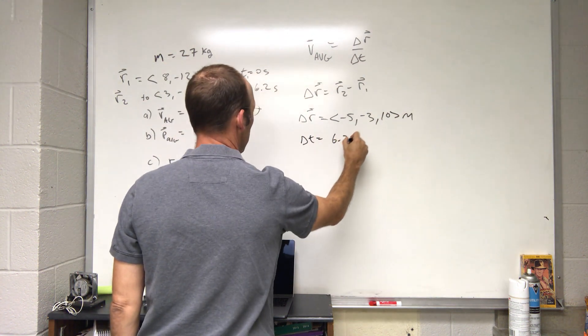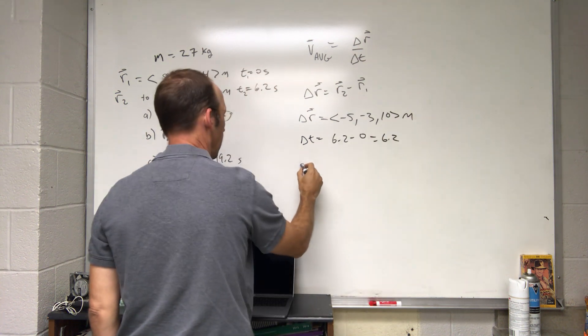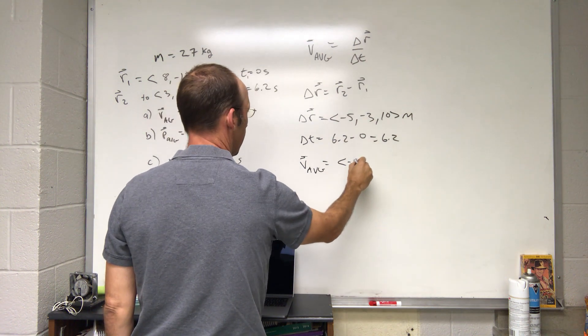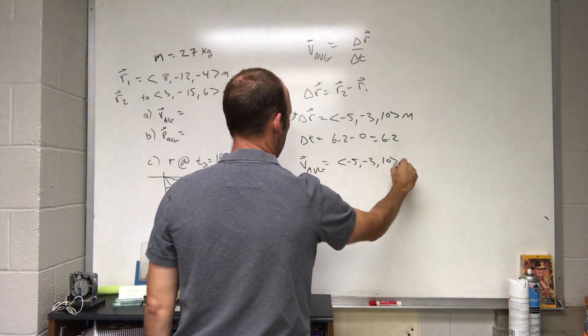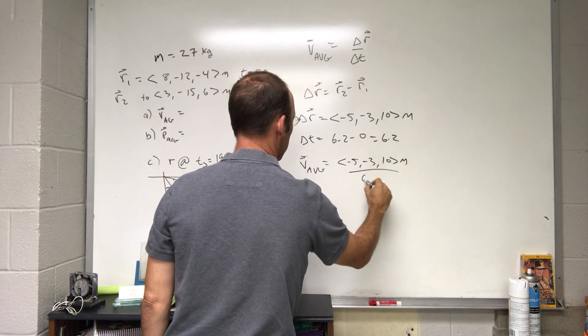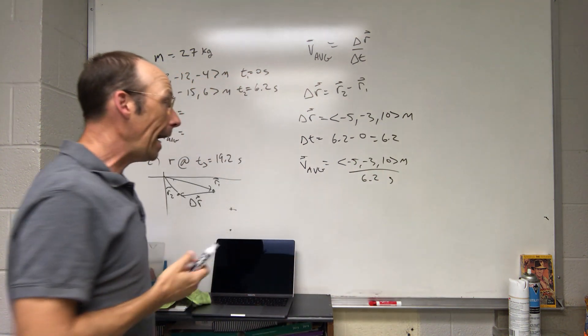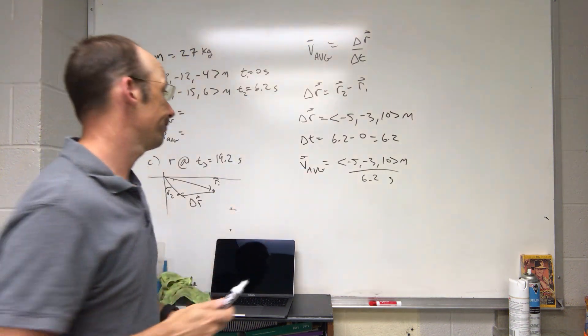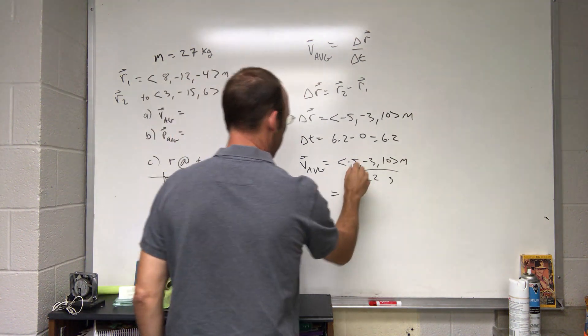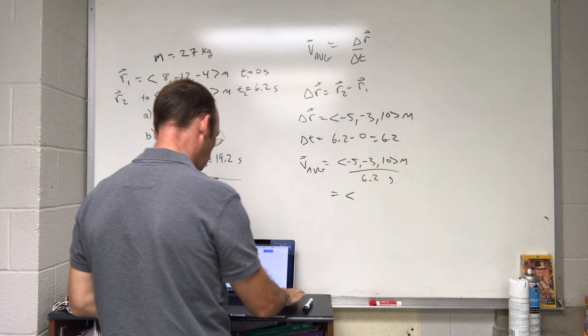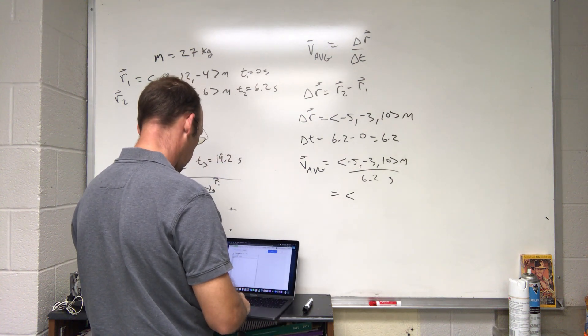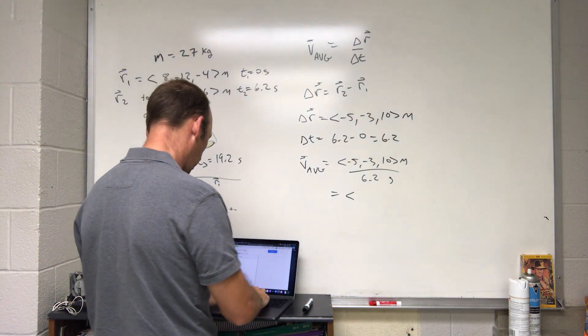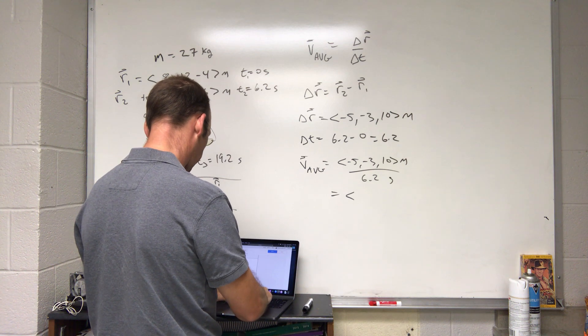That is my displacement. Now for my delta t, I get the final time of 6.2 minus 0, which is 6.2 seconds. So now I can calculate the average velocity, going to be equal to this (-5, -3, 10) meters over 6.2 seconds. I have a vector divided by a scalar, so each component needs to be divided by that scalar. I'm going to do this real quick over here with my Python calculator.